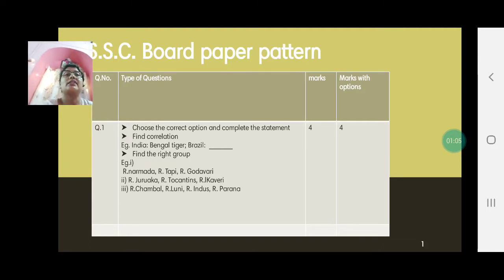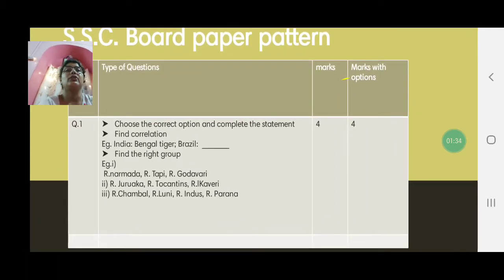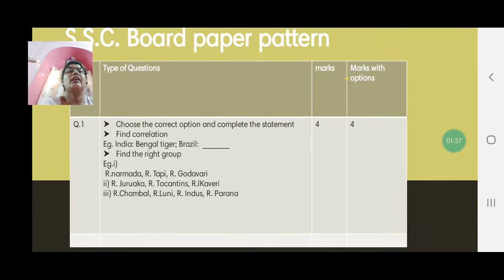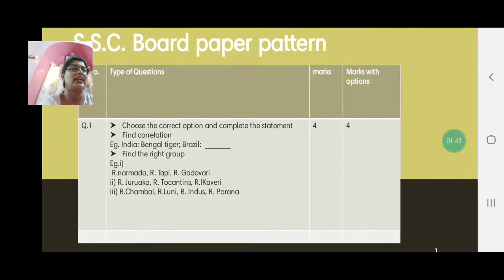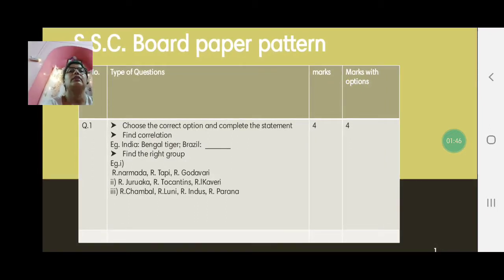With a pen, draw a box or double underline only the answer. Make sure that you have underlined the right answer and not any other word by mistake. If you write only the answer, you will not get any marks. You have to write the complete statement. Another type of questions that can be asked here is find the correlation. For example, India, Bengal tiger. Brazil, look at the correlation here. So Brazil has jaguar.